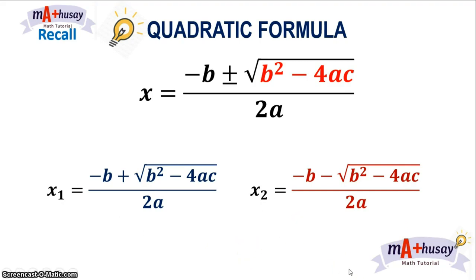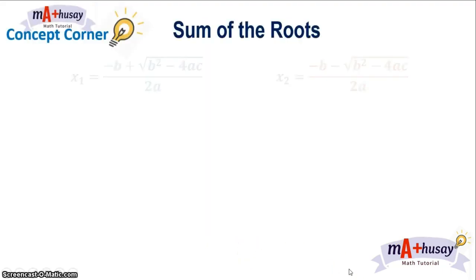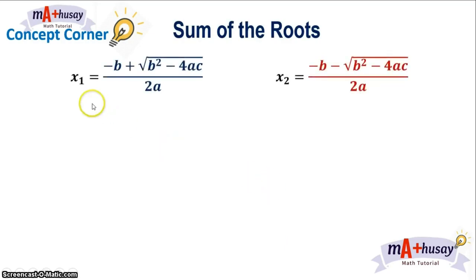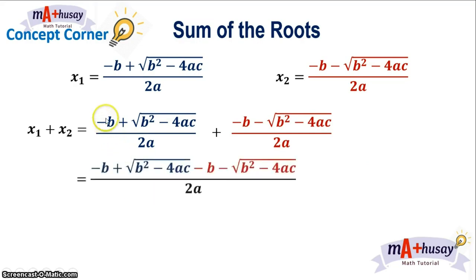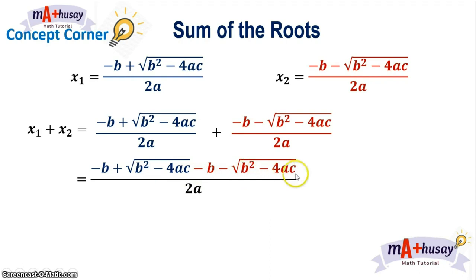To find the sum of the roots, we have to add x₁ and x₂. Since we have the same denominator, we are going to add and combine terms in the numerator. Since we're adding, positive times negative is negative. So we'll have in the numerator: negative b plus the square root of b squared minus 4ac, minus b minus the square root of b squared minus 4ac, all over 2a.